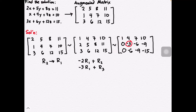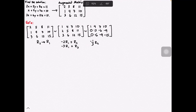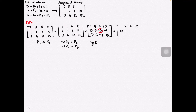Now let's make the negative three entry a leading one so it becomes the pivot point for the second column. These leading ones are important reference points. To make negative three become positive one, we multiply the second row by negative one-third — that is, we divide the entire row by negative three. When negative three becomes positive one, multiplying it by positive six and adding to the negative six in the third row gives zero, which is what we want for our triangular array.